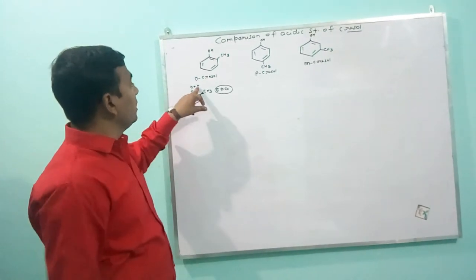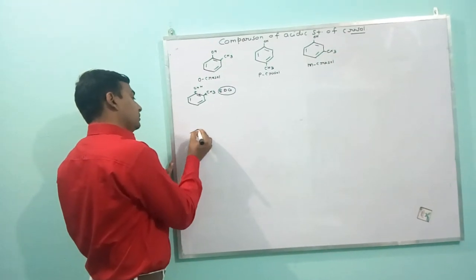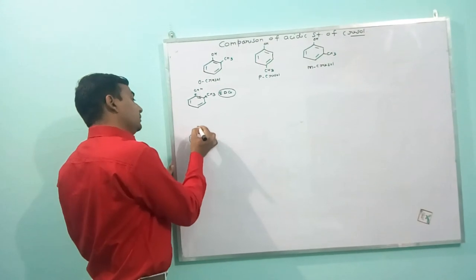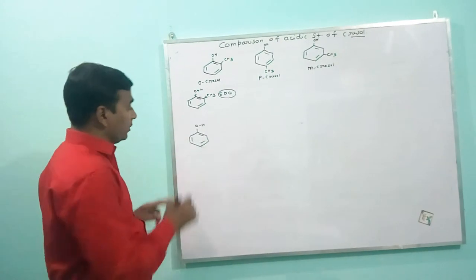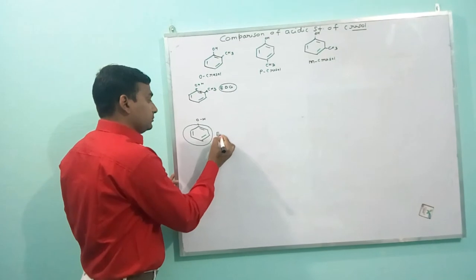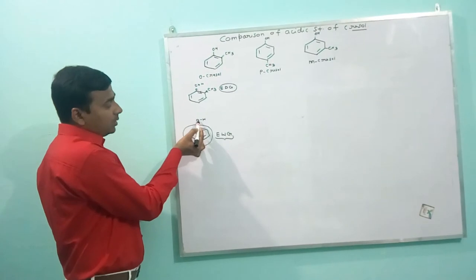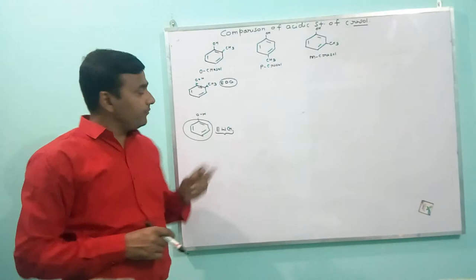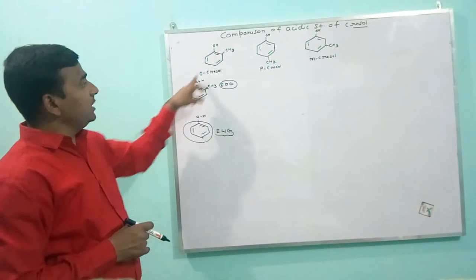it is very difficult to escape this hydrogen atom. While in phenol, there is no electron donating group. Instead of an electron donating group, here this benzene ring acts as an electron withdrawing group, which withdraws the electron from the OH bond, and the hydrogen atom can easily escape from this OH group. So, phenol is more acidic than Cresols.